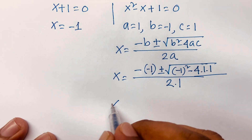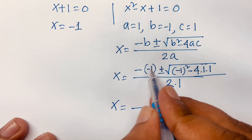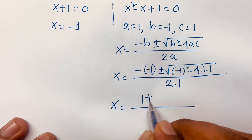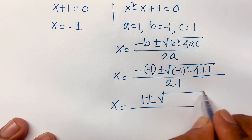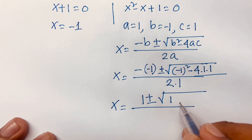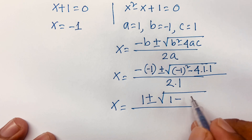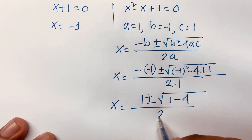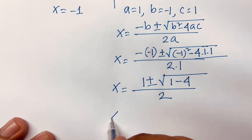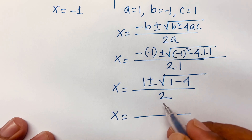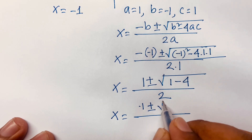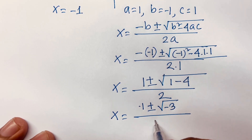This gives x equal to 1 plus or minus square root of 1 minus 4 over 2, since (minus 1)² equals 1 (even power) and 4 times 1 times 1 equals 4, over 2 times 1 equals 2. So x is equal to 1 plus or minus square root of minus 3, all over 2.